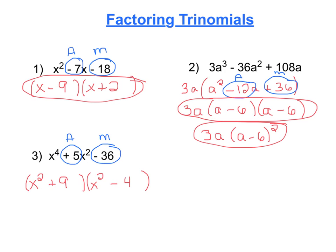If at this point you tried to double distribute these out, we would have x squared times x squared, which is x to the 4th. And then x squared times negative 4 is negative 4 x squared. And if you combine that with a positive 9 x squared, that's how you would get that 5 x squared. And just to finish, 9 times negative 4 is negative 36.